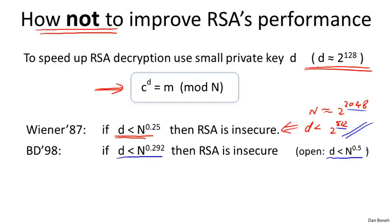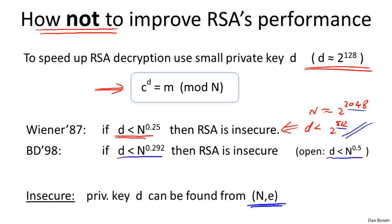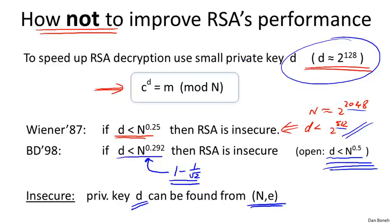To be precise, when I say RSA is insecure, I mean just given the public key N and E, your goal is to recover the secret key d. If you're curious where 0.292 comes from, it's basically 1 minus 1 over square root of 2. The lesson here is that one should not enforce any structure on d for improving the performance of RSA. There's now a slew of results showing that basically any kind of tricks like this to try to improve RSA's performance is going to end up in disaster. This is not the right way to improve RSA's performance.